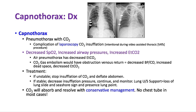With a capnothorax during laparoscopy, saturation often drops, airway pressures go up, and end-tidal CO2 rises. You can differentiate capnothorax from an air pneumothorax: in a capnothorax, end-tidal CO2 increases; in an air pneumothorax, end-tidal CO2 decreases. This also differentiates it from CO2 gas embolization, where a large gas embolism obstructs venous return, decreasing cardiac output and also causing a decrease in end-tidal CO2.